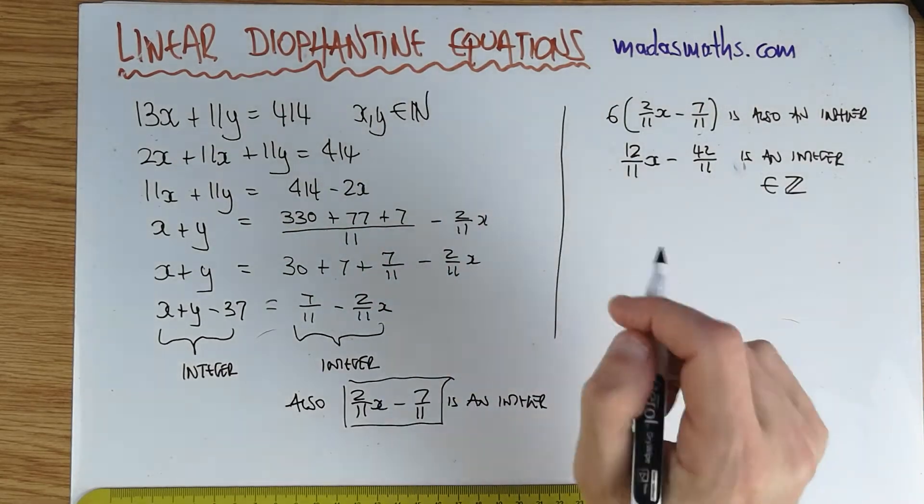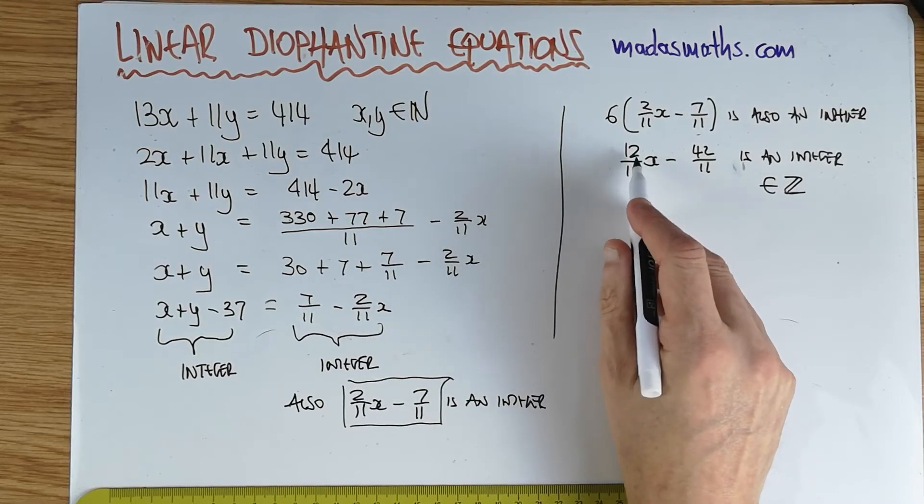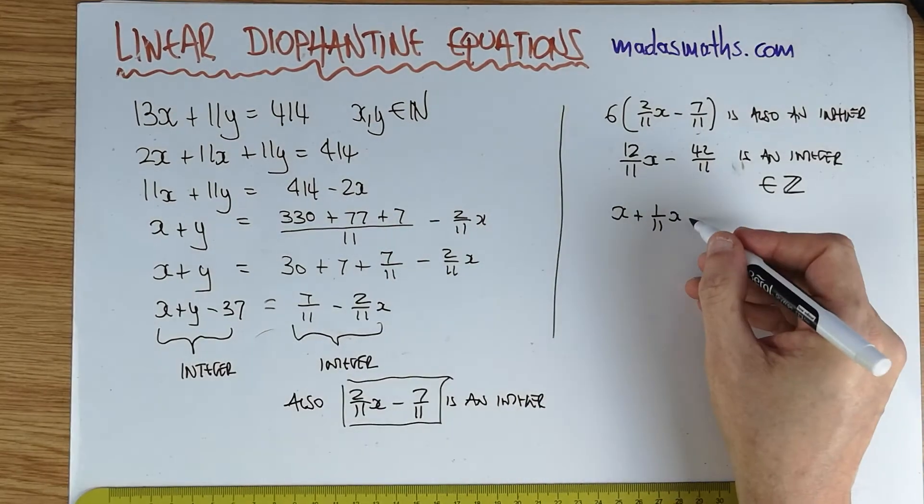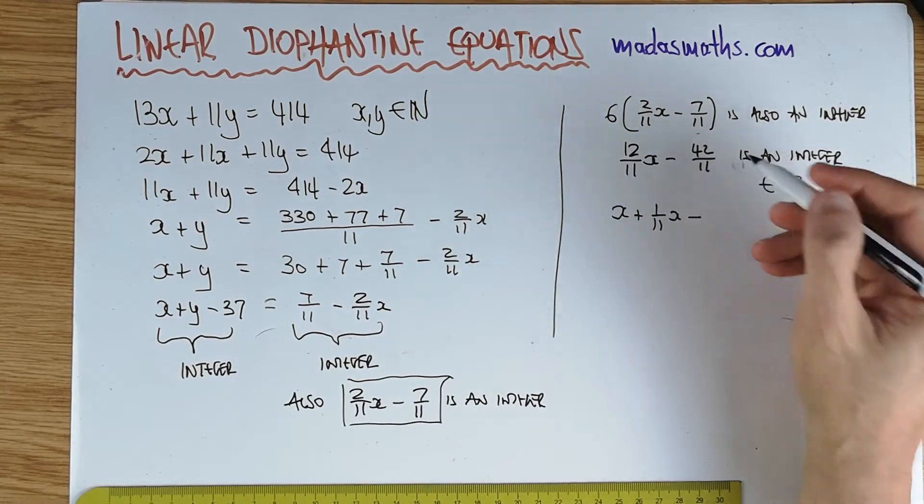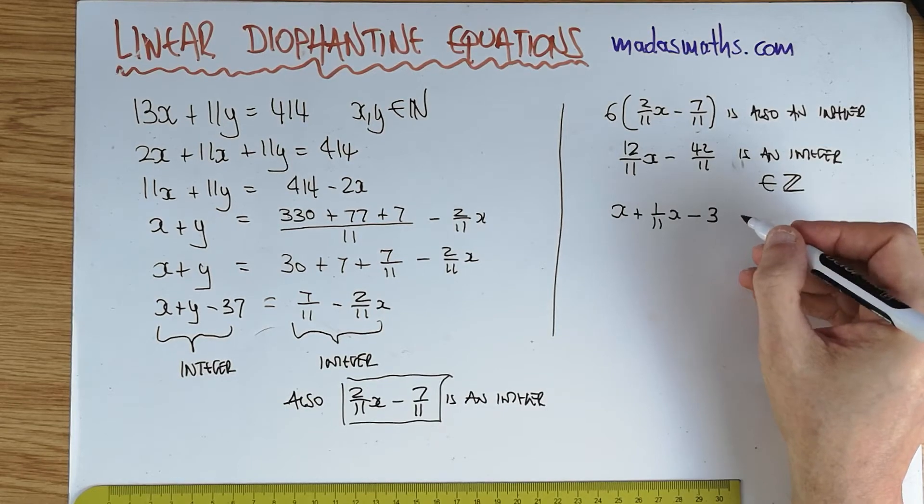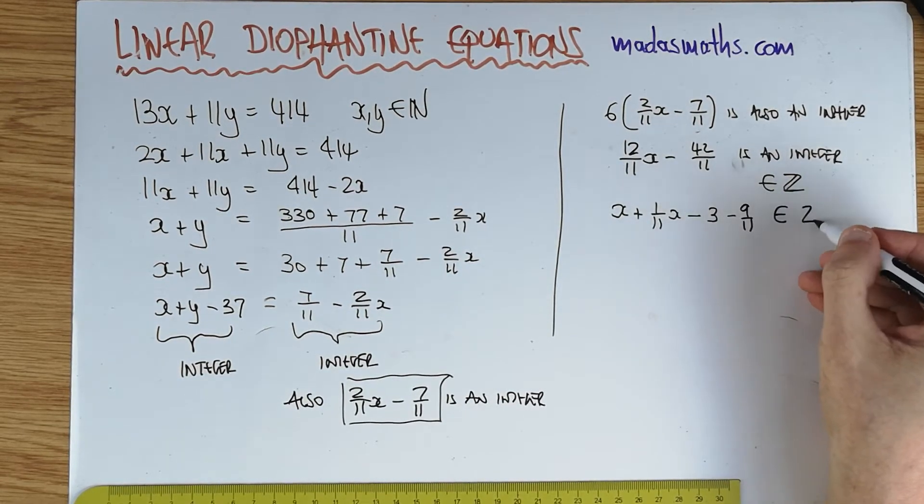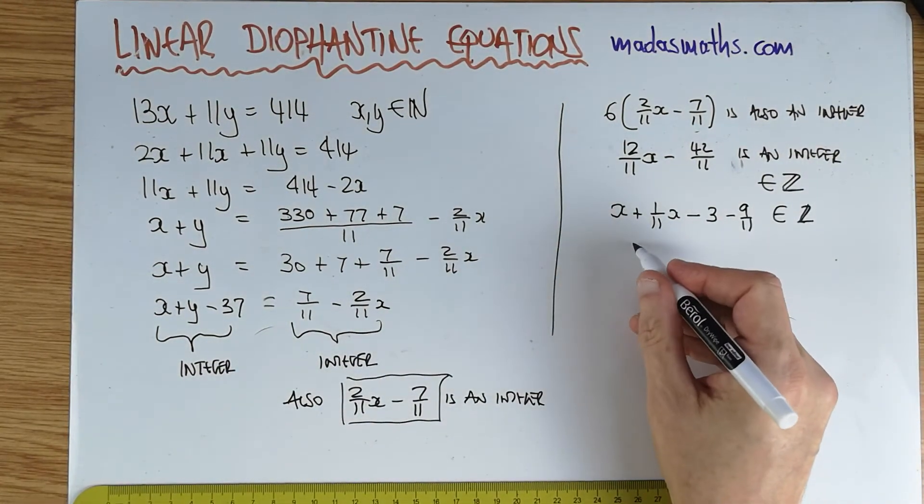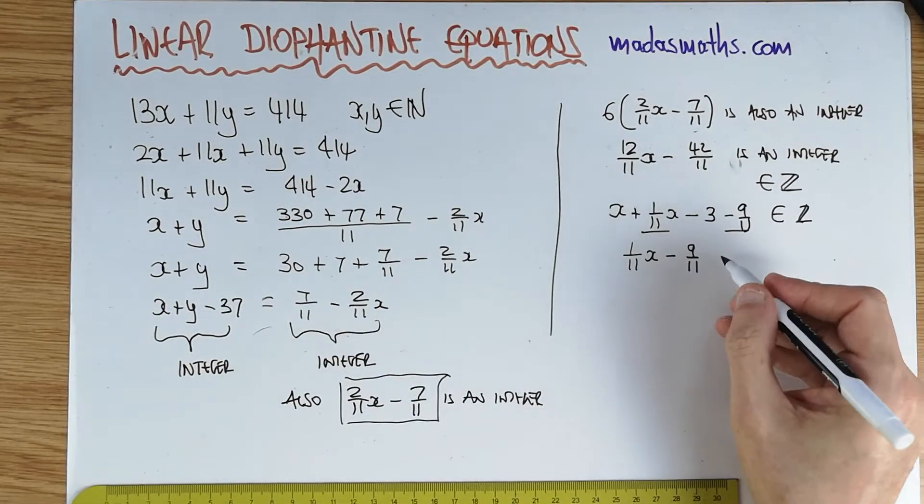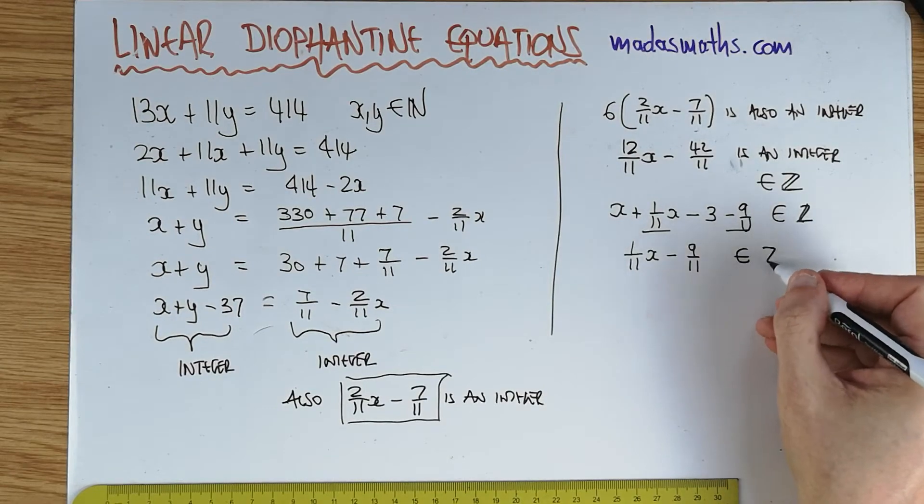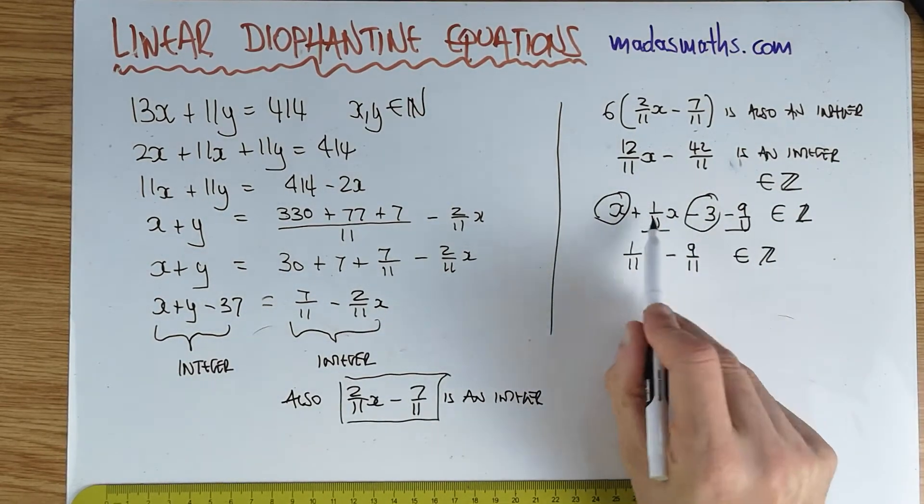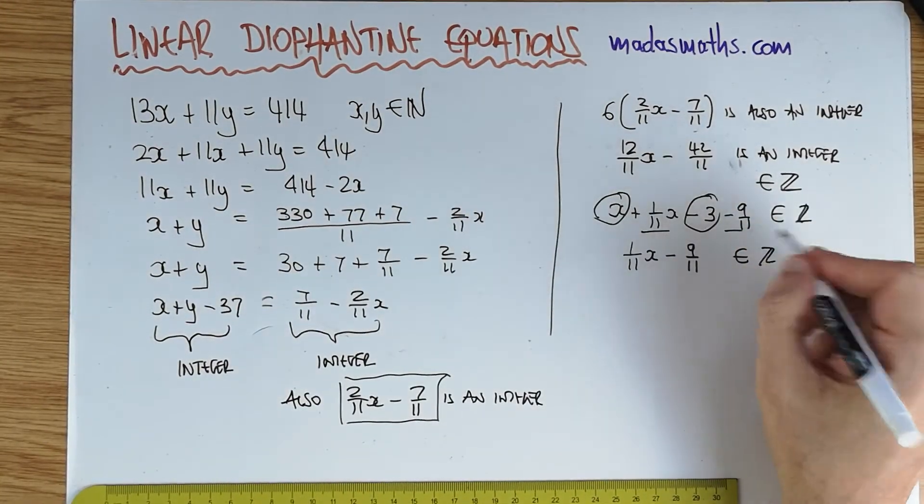The reason I went one more is because I want a coefficient of 1 over something. So x plus 1/11 x minus from this one, I'm going to have a 3, 3 and from 33, I go 7 minus 9/11 or something. And therefore, 1/11 x minus 9/11, since all of this is an integer, will also be an integer, because that bit together with the minus 3 is an integer.